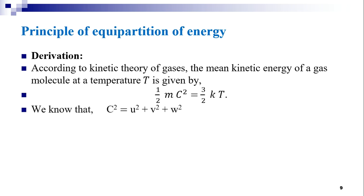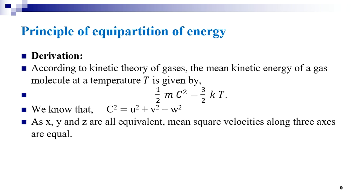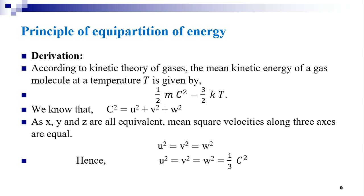We know that c² = u² + v² + w², where u, v, and w are the velocity components of the molecule along the x, y, and z axes respectively. Since x, y, and z are all equivalent, the mean square velocities along the three axes are equal. Therefore, ū² = v̄² = w̄² = (1/3)c².